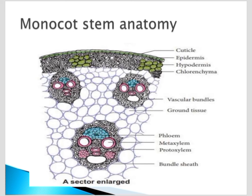The stem contains an outer waxy cuticle, and next to that epidermis is present to protect it. Epidermal hair is absent. Next, sclerenchyma — that is dead cells — containing hypodermis we see in the monocot stem, along with chlorenchyma, that is parenchyma with chloroplasts.